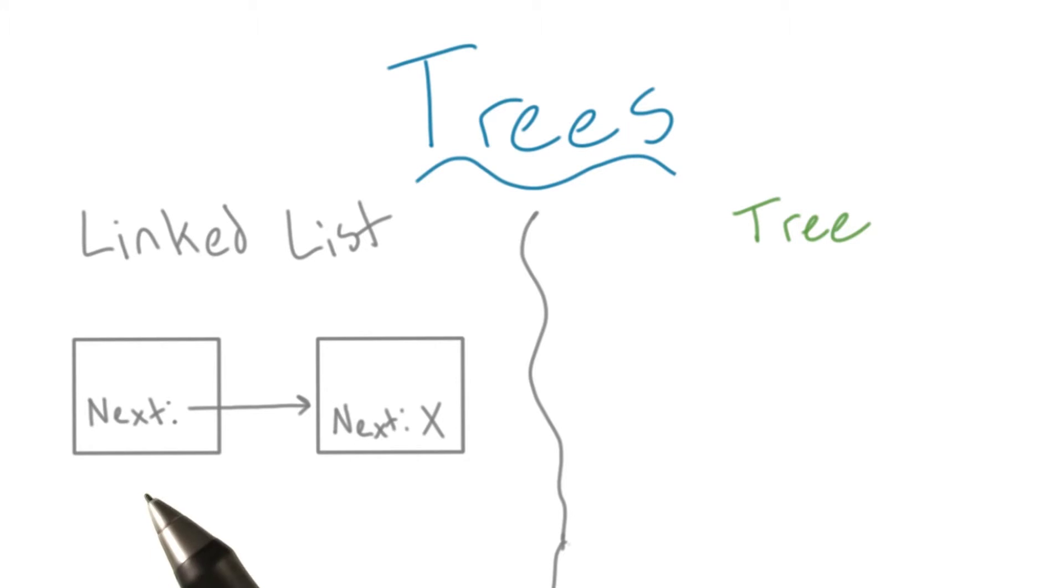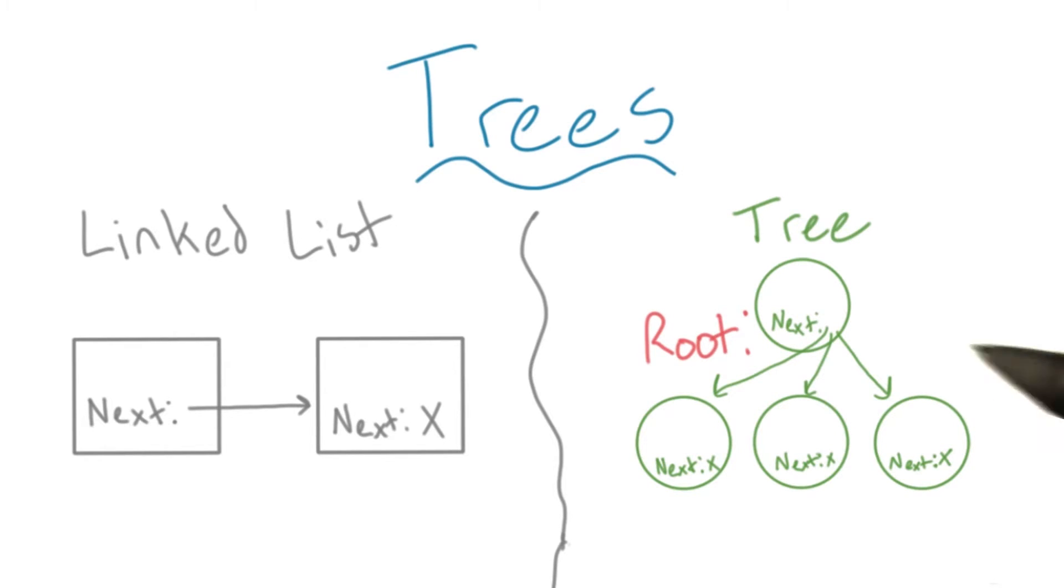A linked list has one element at the front and a next pointer to another element and so on. A tree is similar. The first element is called the root. Instead of having just one next element, a tree can have several.